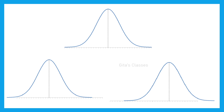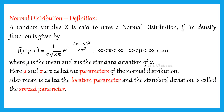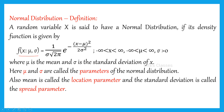Now let us see the definition of normal distribution. A random variable x is said to have a normal distribution if its density function is given by f of x, with mu and sigma as parameters. The formula is: 1 by sigma into root of 2 pi, times e power minus x minus mu the whole square by 2 sigma squared, where x varies from minus infinity to plus infinity, mu also takes values from minus infinity to plus infinity, and sigma is greater than 0. Here mu is called the mean and sigma is called the standard deviation — they are the parameters of the normal distribution because they decide the nature of the curve.